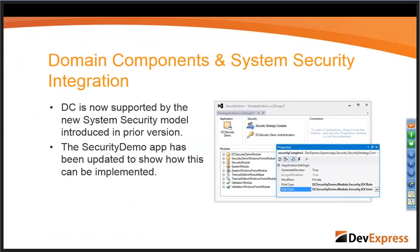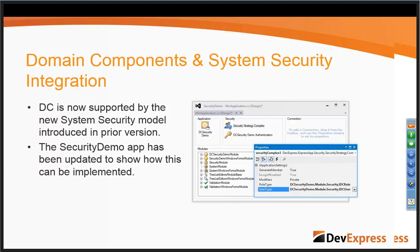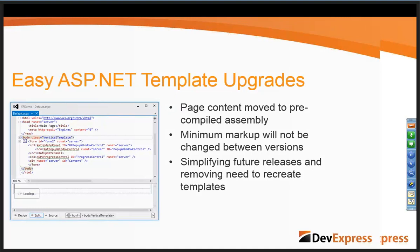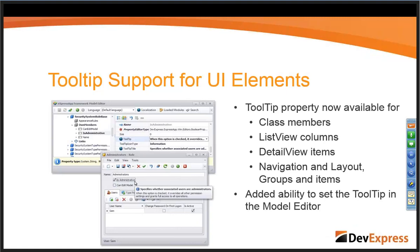One of the other cool things in 12.2 is we've now moved all the main page content for the ASP.NET templates into a pre-compiled assembly. What this means is that there is minimum markup in the ASP.NET templates, which won't change between versions — so future updates will not require you to create new applications and copy information to and from. We've also got additional tooltip support for class members, list view columns and detail items, and inside the navigation and layout groups and items. Controls have always had tooltip support, but previously you had to do it inside code. We've now got a visual way of doing that inside the model editor. If you're using WinForms, you can also set the title and the icon.